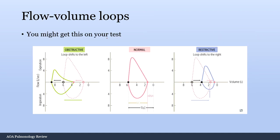Flow volume loops may appear on your test. On these graphs, lung volume numbers increase to the left and decrease to the right. Obstructive lung disease is shifted to the left, indicating higher lung volumes. Restrictive lung disease is shifted to the right, indicating smaller lung volumes. Knowing what these graphs represent should make these questions straightforward.